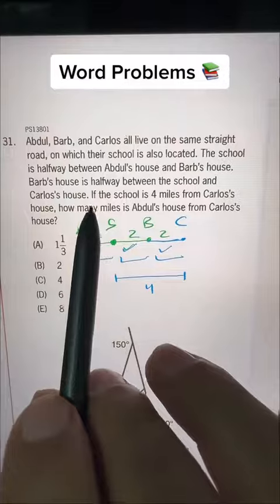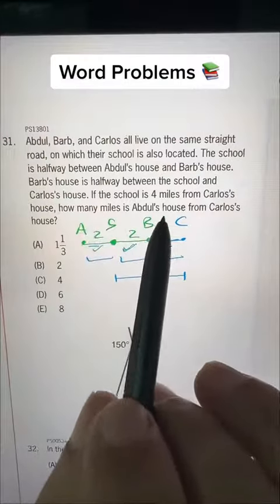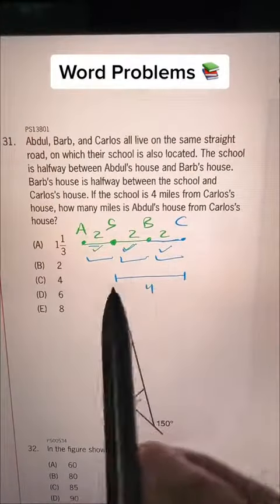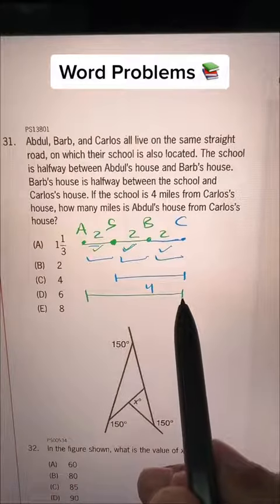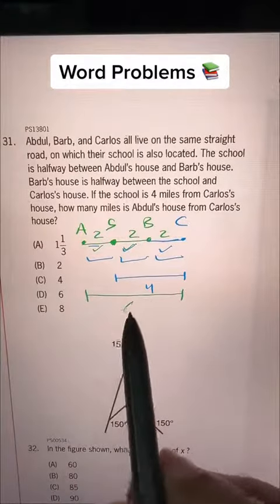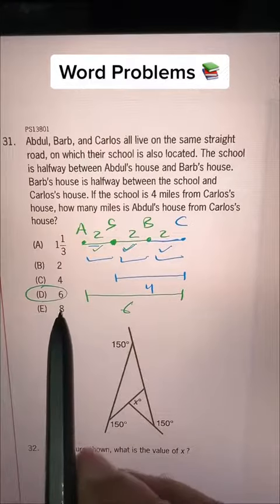So what does it want? How many miles is Abdul's house from Carlos's house? So Abdul to Carlos, it's total. This four plus two is six, that's our choice, D.